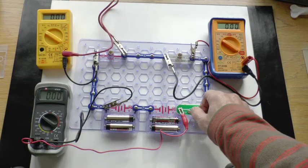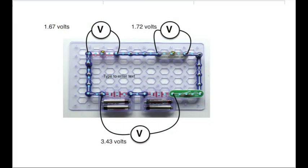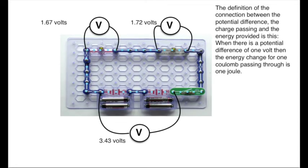Switching on, we'll take the voltmeter readings and then transfer them to the diagram and think about the connection between them. Remembering that each volt represents a change of energy of one joule for every coulomb that passes through.